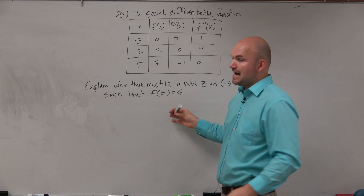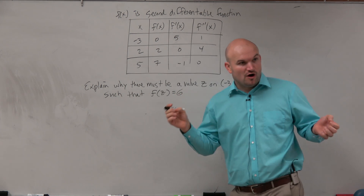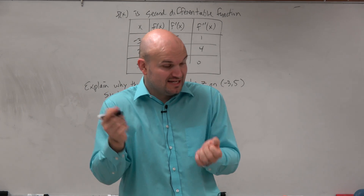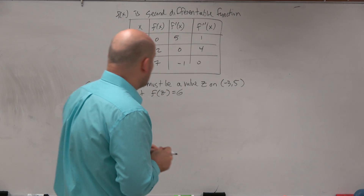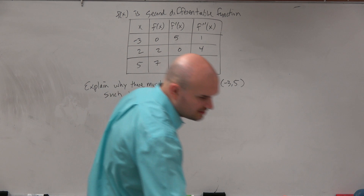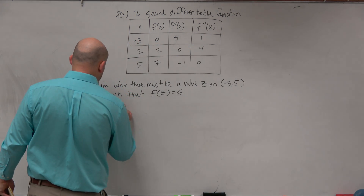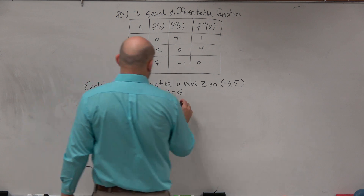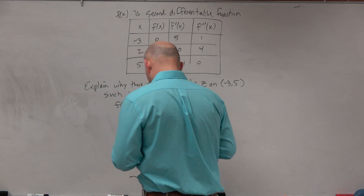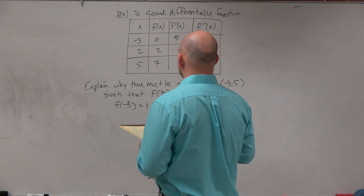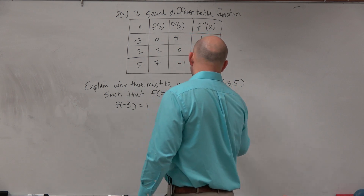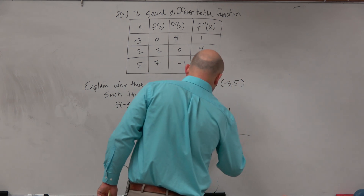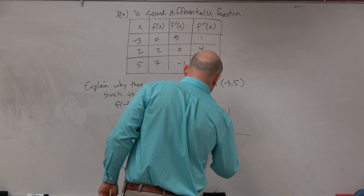The main important thing, though, is we want to find: does this output value 6 fall between our two values? Because we want to find the value c that exists. So we're going to need to check our two endpoints. Let's take a look at f of negative 3. At f of negative 3, we're equal to 1. And at f of 5, we're equal to 7.